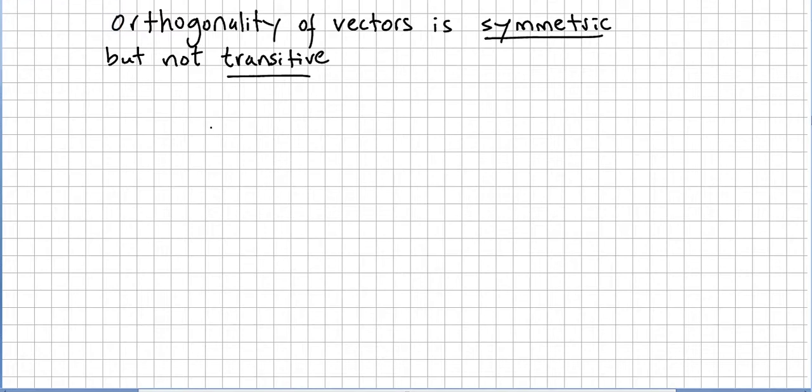This video is on the chapter of vectors in vector spaces, specifically the section on distance, angles, and projections. In the previous video we introduced the concept of orthogonality of vectors. In this video we are going to show that orthogonality of vectors is symmetric but not transitive, and this is a very important concept because this will have high repercussions on the geometric level.